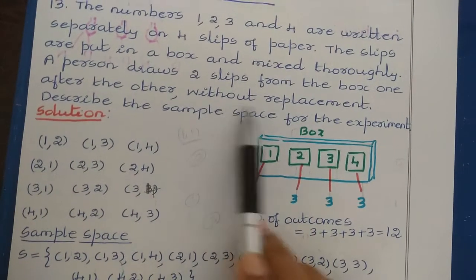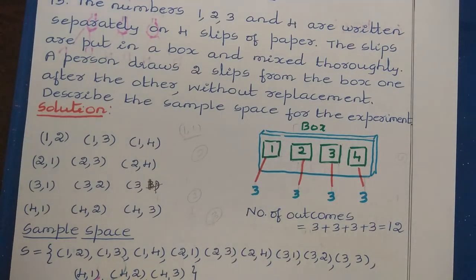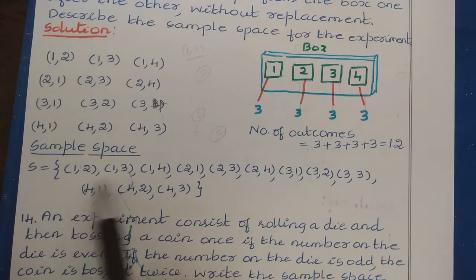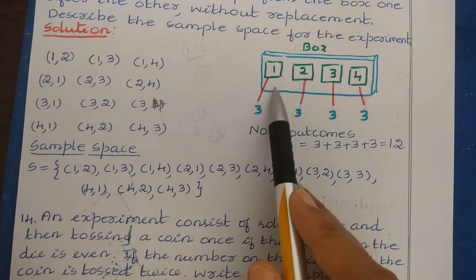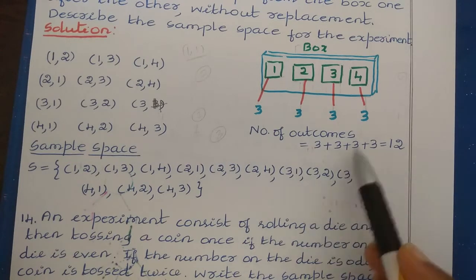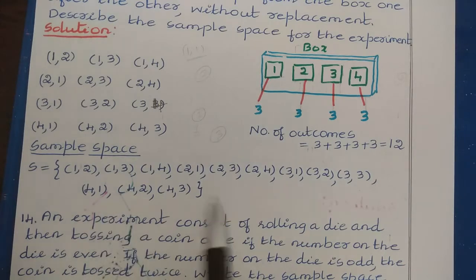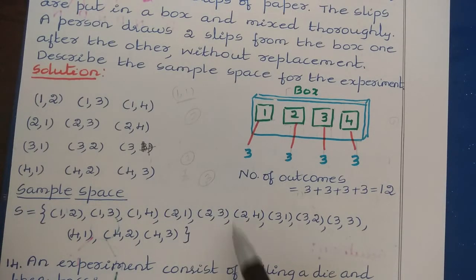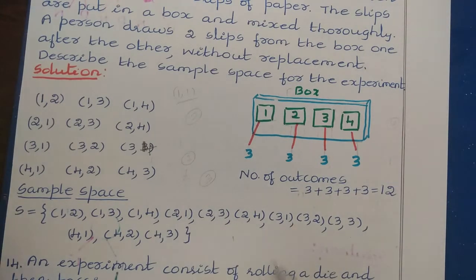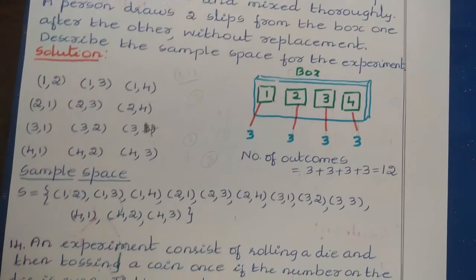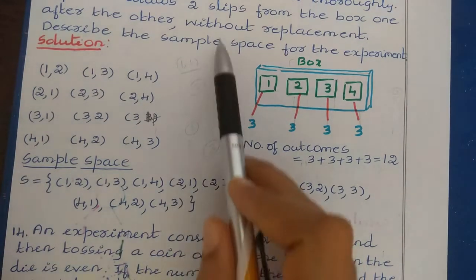However, since they have clearly stated it is without replacement, we do not include (1,1), (2,2), (3,3), or (4,4). So the sample space S = {(1,2), (1,3), (1,4), (2,1), (2,3), (2,4), (3,1), (3,2), (3,4), (4,1), (4,2), (4,3)}, giving a total of 12 outcomes. If it were with replacement, we would have 4 extra outcomes: (1,1), (2,2), (3,3), and (4,4).